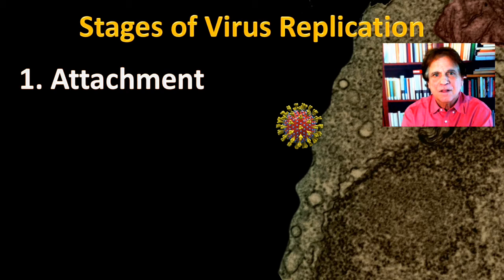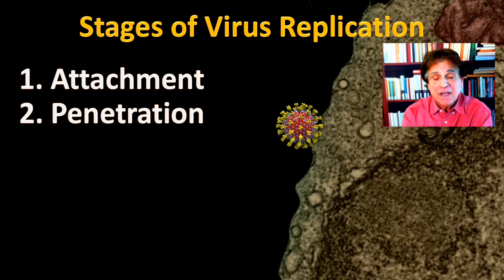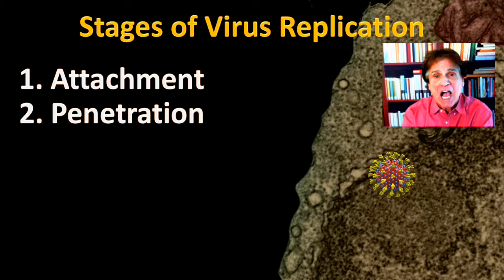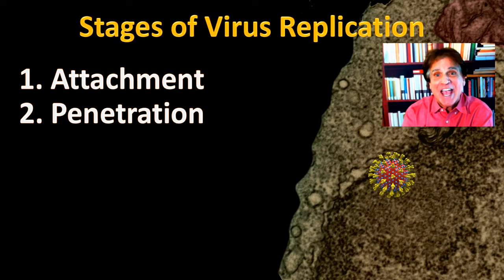The second stage of virus replication is called penetration, and that is when the virus enters the cell. Sometimes the entire virus particle passes through the cell membrane and goes into the cytoplasm. Other times, while bound to the surface of the host cell, the virus inserts only its genetic code into the host cell. In the case of SARS-CoV-2, it is the entire particle which gains entry into the cell cytoplasm.